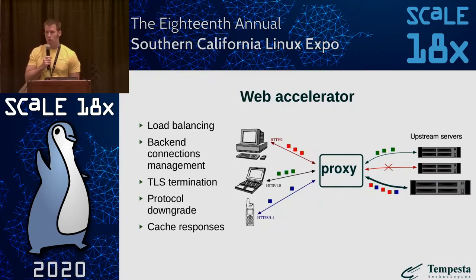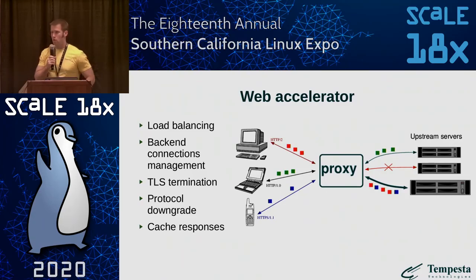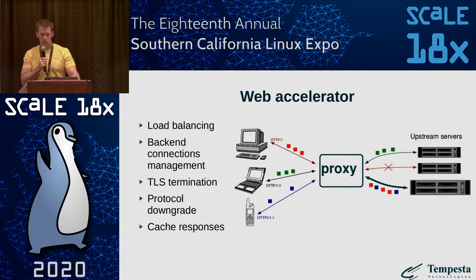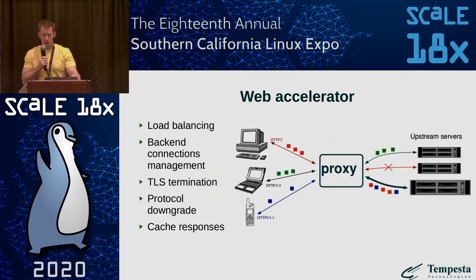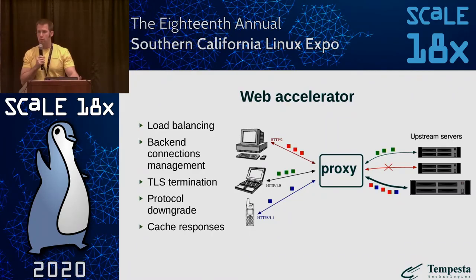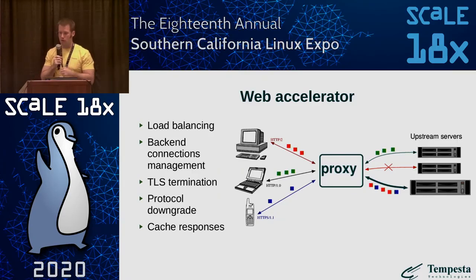Let's have a look at what a typical web accelerator does. First of all, it caches content received from upstream server. We see three clients with different protocols: HTTP/2, HTTP/1.1, and HTTP/1. We have upstream servers, and this means that the first thing a proxy must do is upgrade or downgrade the protocol from clients to the protocol supported by the upstream servers.